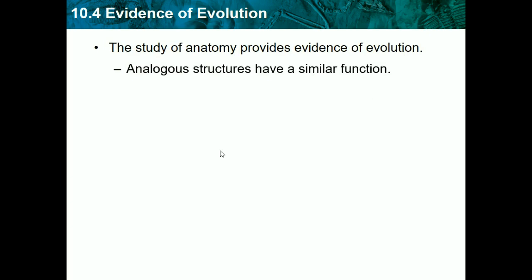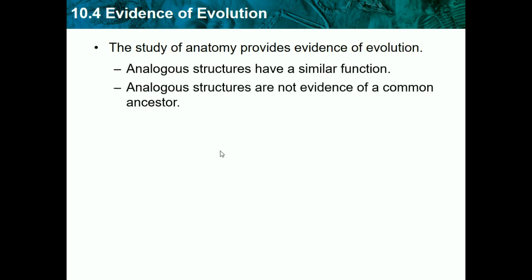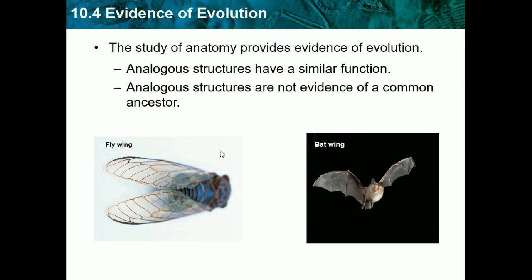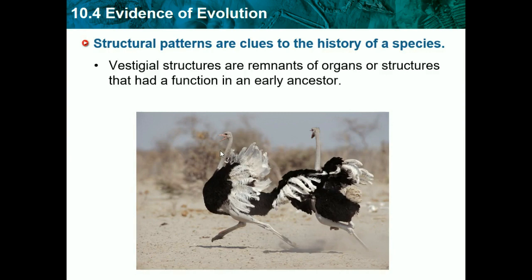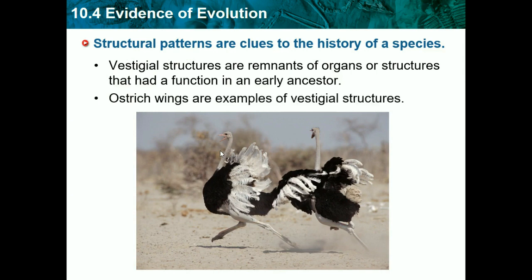Analogous structures have similar function but are not evidence of common ancestry, because they don't share a similar structure from one common animal — they just have the same function. A fly wing and a bat wing are totally different but both used to fly. Vestigial structures are remnants of organs or structures that had a function in early ancestry. For example, ostriches have wings but can't fly, so that's a vestigial structure — they have it but it has no use. Maybe an earlier ancestor of the ostrich used its wings to fly.